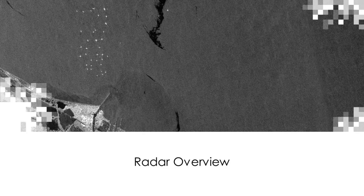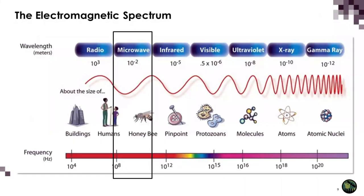Let's start with a radar overview. If you're already familiar with this material, hopefully it will serve as a refresher. Let's start with the electromagnetic spectrum, which is the range of electromagnetic energy that spans from very long wavelengths to very short wavelengths. Most remote sensing sensors are designed to operate at specific regions of the electromagnetic spectrum according to the objectives they intend to achieve.